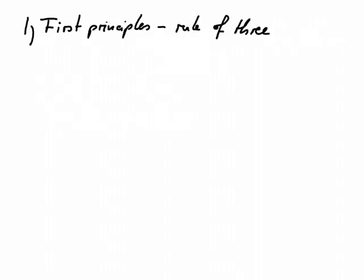So we can start with this method that I call the first principles method, and the rule of three, which is a pretty logical method. We've got a 0.3 molar solution. What does that actually mean? It means that one liter of our solution contains 0.3 moles.